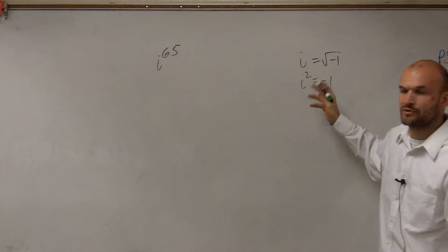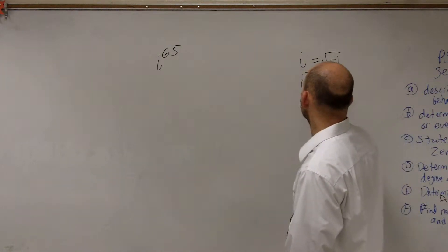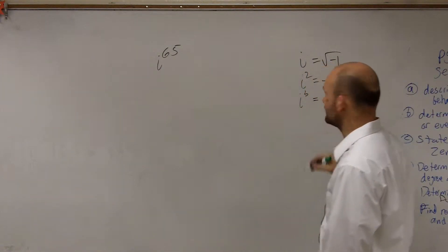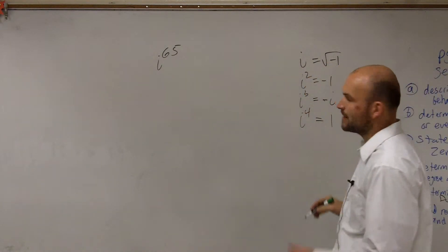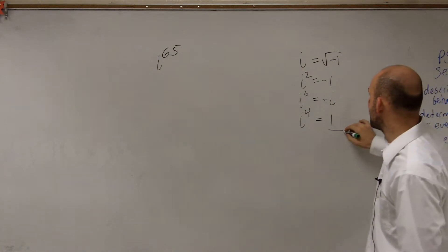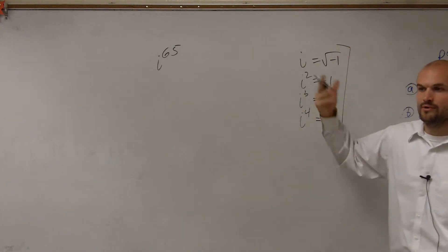If we multiply by i again on both sides, we'll now have i cubed equals negative i. And then if we multiply by i on both sides again, we get i to the fourth equals positive 1. And what we noticed was after 4, we start repeating again.